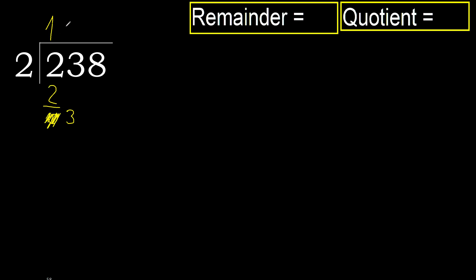2 multiplied by 2 is 4. 4 is greater. Multiply by 1 is 2. It is not greater. Subtract. Next.